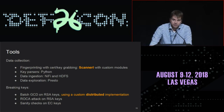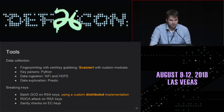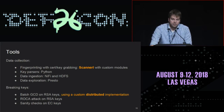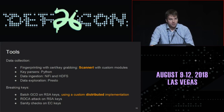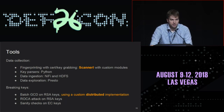That database is stored in HDFS and we use Presto to run SQL queries on the data set. For breaking keys, we wrote a tool in Chapel to compute the batch GCD of all those keys — essentially computing the GCD between every pair of RSA moduli. This is a distributed implementation that scales: you can throw more machines at it, it's constant in memory. We also check for the ROCA attack and run checks on EC keys like invalid parameters and key lengths.